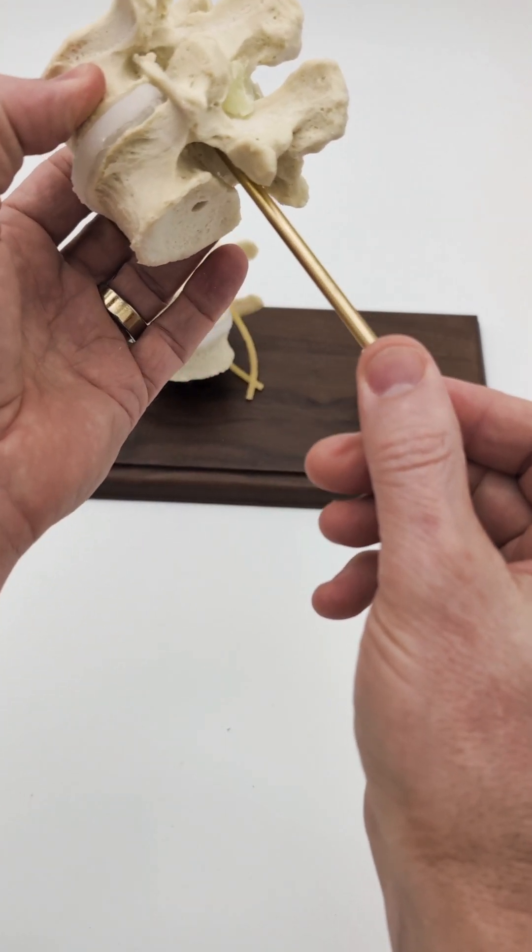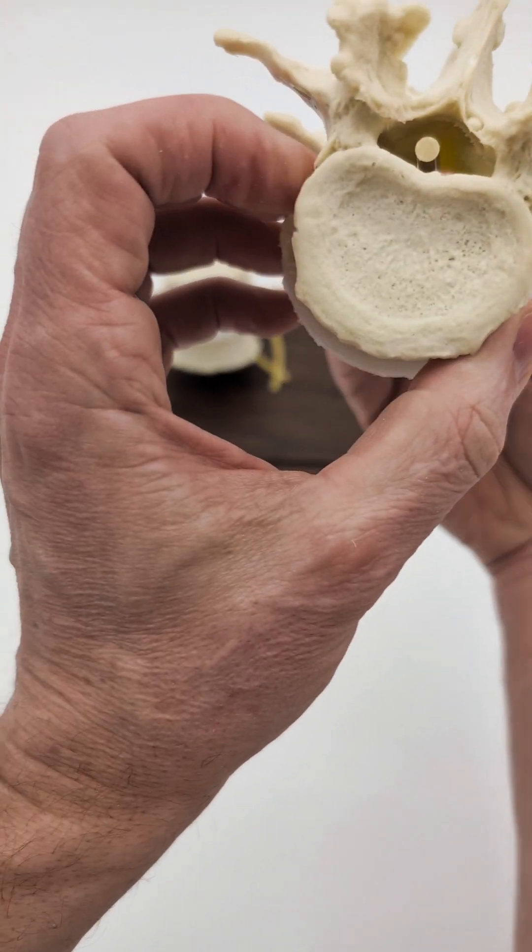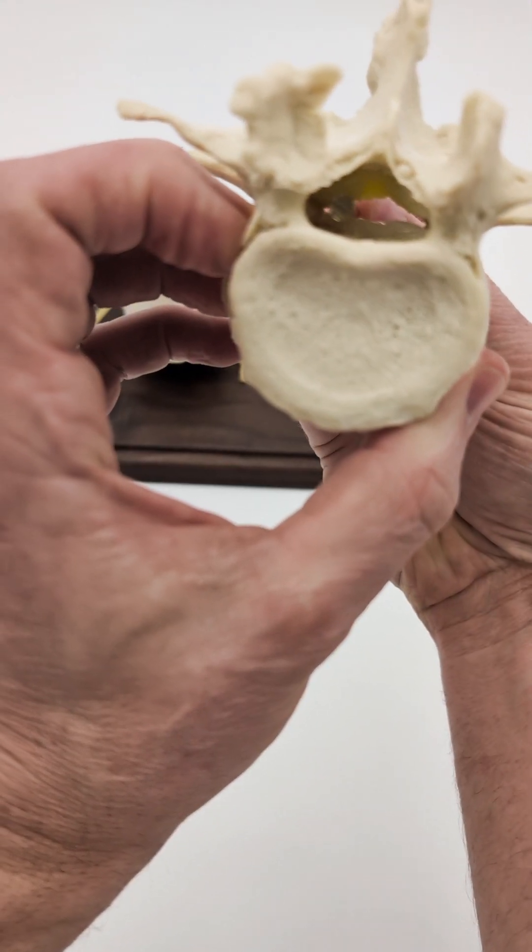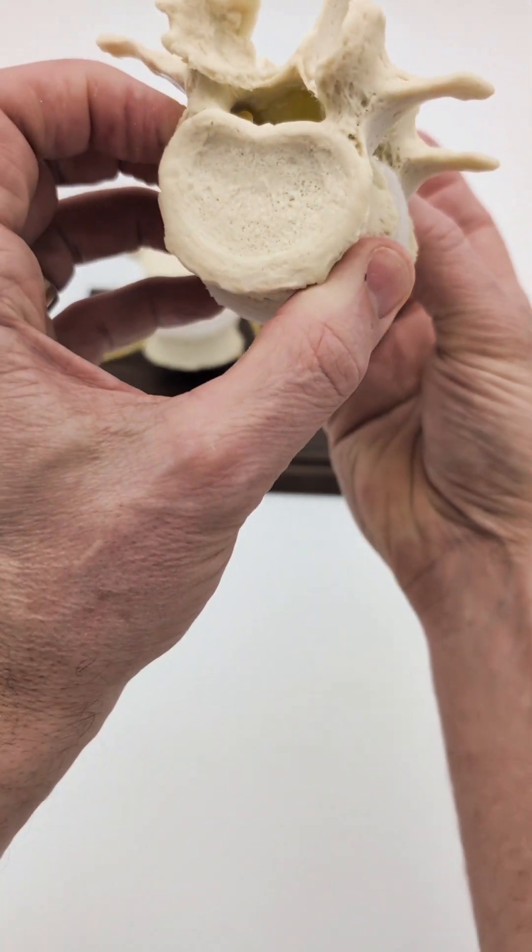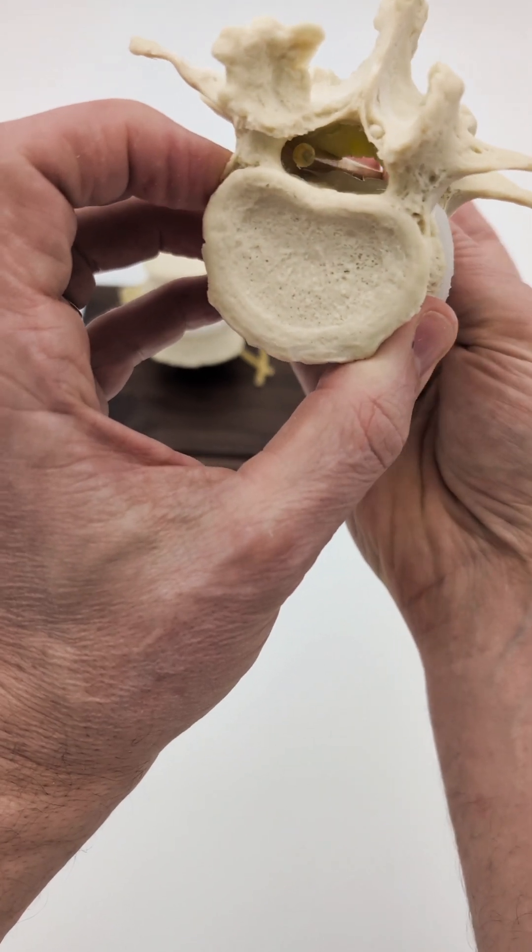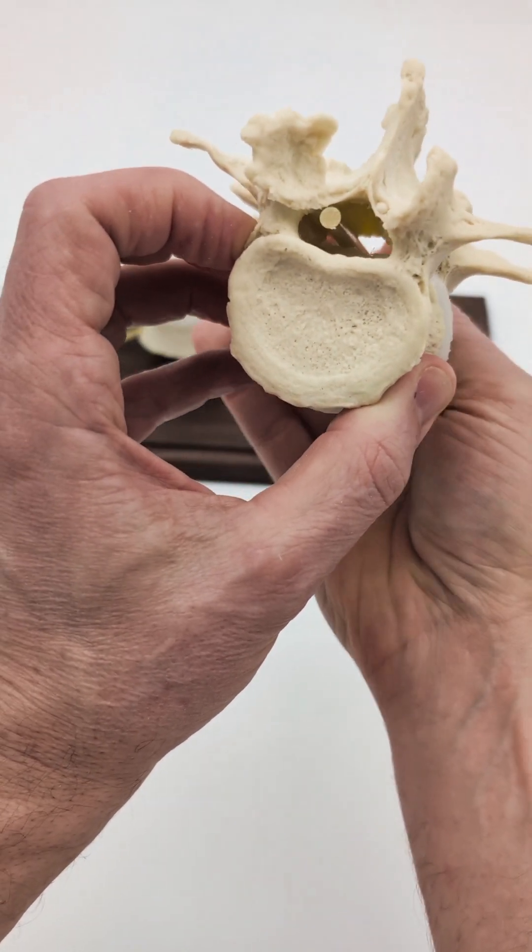So this freely moves on this side. But if I bring it over to this lateral recess, slide it over this way, it's stiffer. It's more narrow. Stenosis takes effect there.